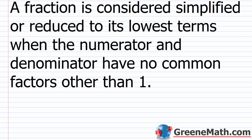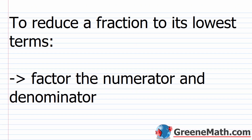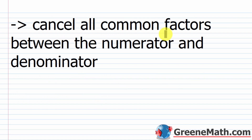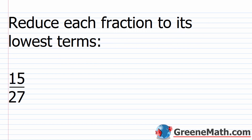Now that we understand how two or more fractions can look different but have the same value, let's talk about reducing a fraction to its lowest terms. A fraction is considered simplified — or reduced to its lowest terms — when the numerator and denominator have no common factors other than 1. To simplify a fraction, you start by factoring the numerator and denominator completely, then cancel all common factors between them.